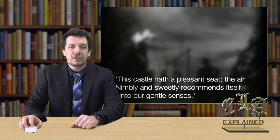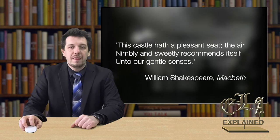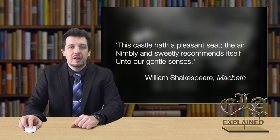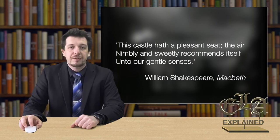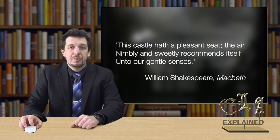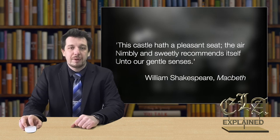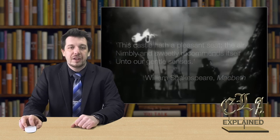In Shakespeare's tragedy Macbeth, the main character and his wife are plotting to murder King Duncan, who comes to stay in their castle. The king, who does not suspect anything and trusts Macbeth, praises the castle, but his words carry a different meaning for the people in the audience, who know that this castle, which has a pleasant seat, is where the king is going to die.